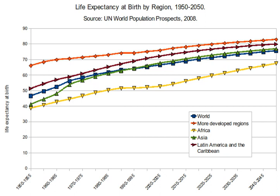Men are also more likely to die from most of the leading causes of death than women. Some of these in the United States include cancer of the respiratory system, motor vehicle accidents, suicide, cirrhosis of the liver, emphysema, prostate cancer, and coronary heart disease. These far outweigh the female mortality rate from breast cancer and cervical cancer. Some argue that shorter male life expectancy is merely another manifestation of the general rule, seen in all mammal species, that larger individuals tend on average to have shorter lives. This biological difference occurs because women have more resistance to infections and degenerative diseases.